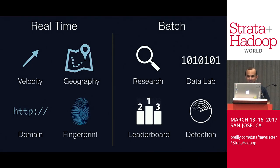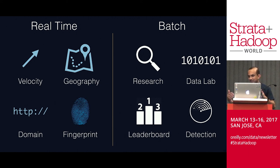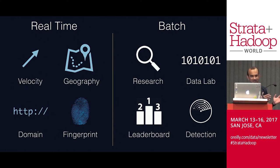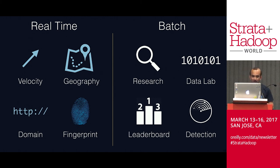What our security research and intelligence team really wants to know is what's happening in the world out there — the most harmful threats affecting more people in more places in more ways on more days. If we can quantify that information, we can protect our customers. To answer that question, we look at certain parameters — some real-time, some batch. For example, we need to look at velocity: how fast security threats are happening across the world, what geographical locations are being targeted, and what domains those threats are coming from.